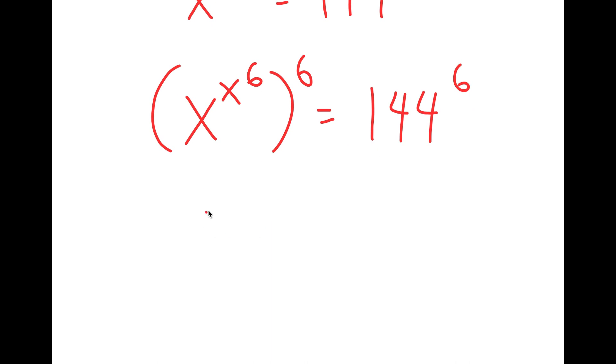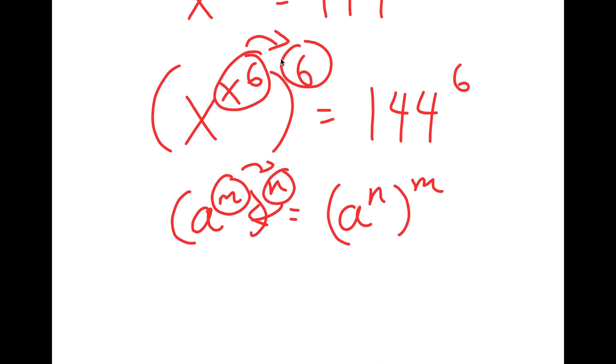Now from here, if I have something in the form a to the power of m to the power of n, this is equal to a to the power of n to the power of m. So basically, I can switch the places of these two exponents. So that's what I'm going to do with x to the power of 6 and 6.